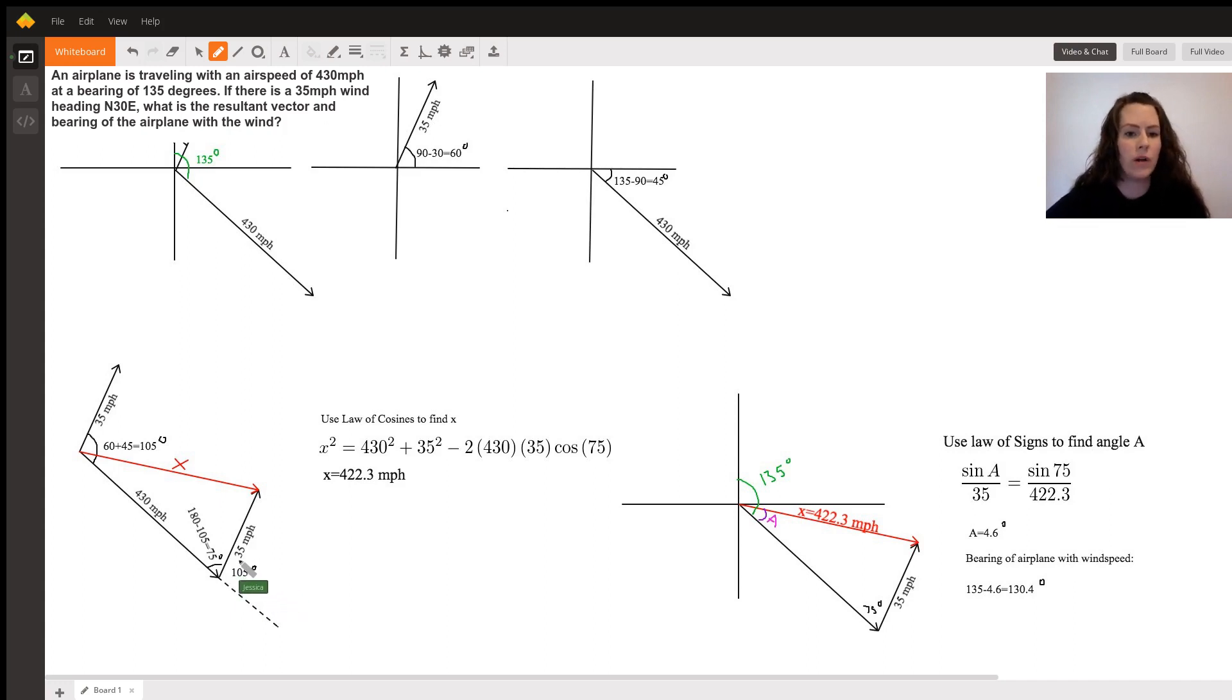The reason why we want to know that is we're trying to find the angle in here between the two vectors when the vectors are attached to each other, because that is the definition of a resultant vector. When you take the first vector and add the second vector to the tail of the first vector,